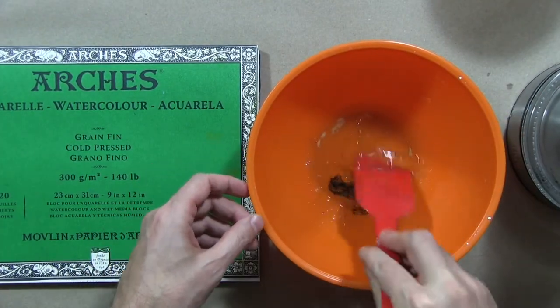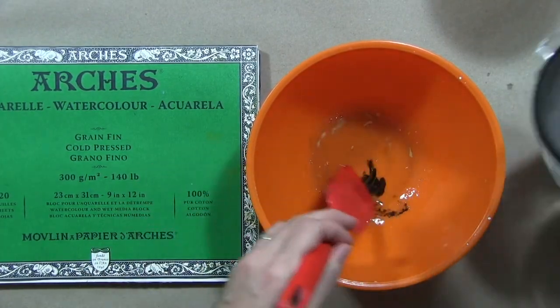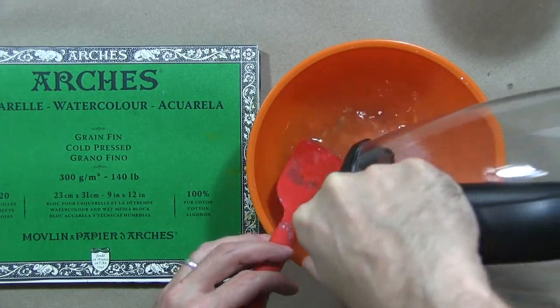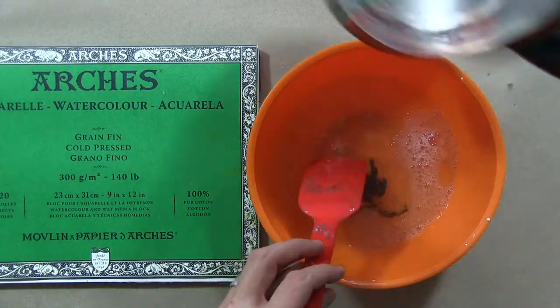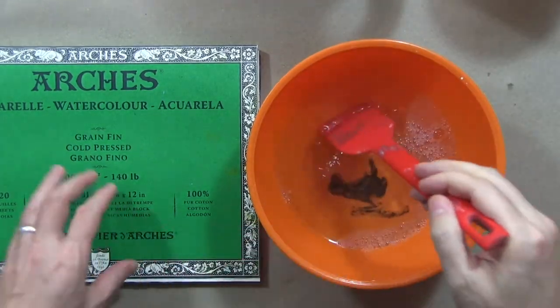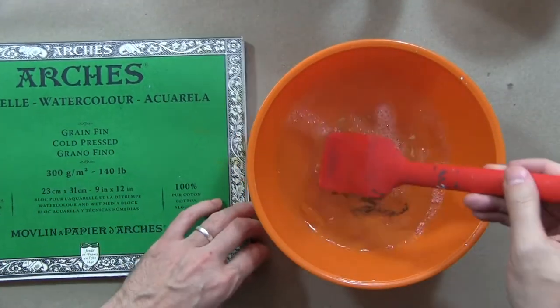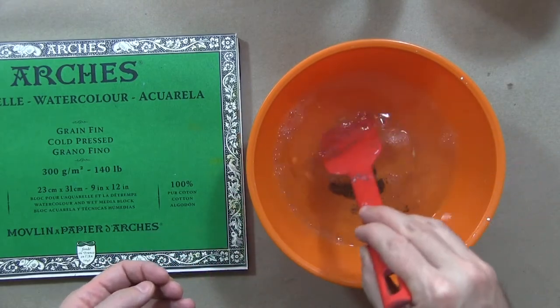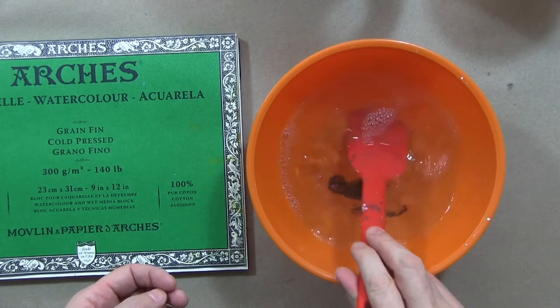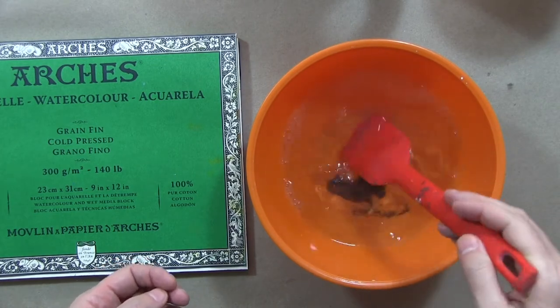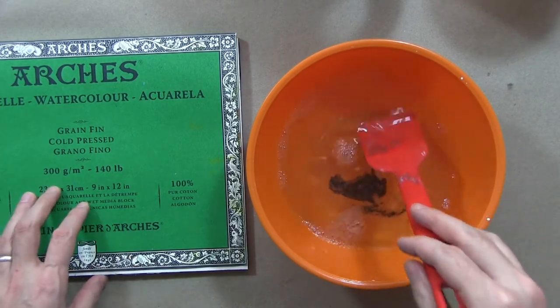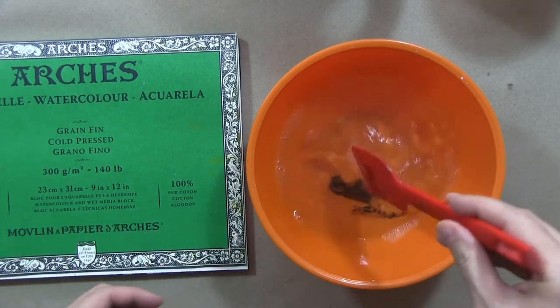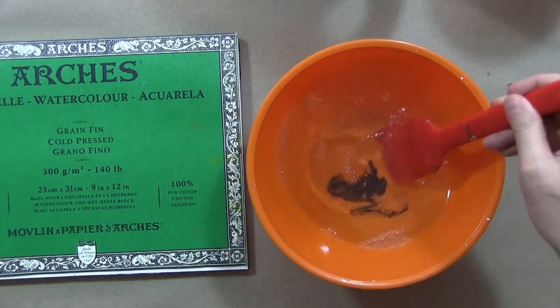As long as there are no big major chunks it should be fine. I'll go ahead and add the rest and mix it really well. You can see it's going to make quite a lot, so it's usually good to have a few pieces of paper ready that you want to size with the gelatin size.